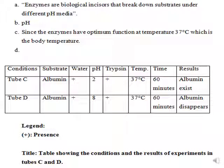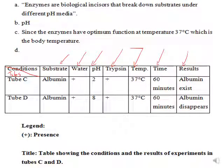Now let's pay attention to how to draw the table of conditions. We write the tubes C and D. The conditions listed are: substrate, water, pH, trypsin enzyme, temperature, time, and results. Albumin is present in both tubes — you can write plus/plus. Water is present in both — plus/plus. pH is 2 in tube C and 8 in tube D. Trypsin is present in both — plus/plus. Temperature is 37°C, time is 60 minutes. Results: albumin exists and remains in tube C, while albumin disappears in tube D. The table should be drawn with a pencil and ruler, then filled in with a pen.